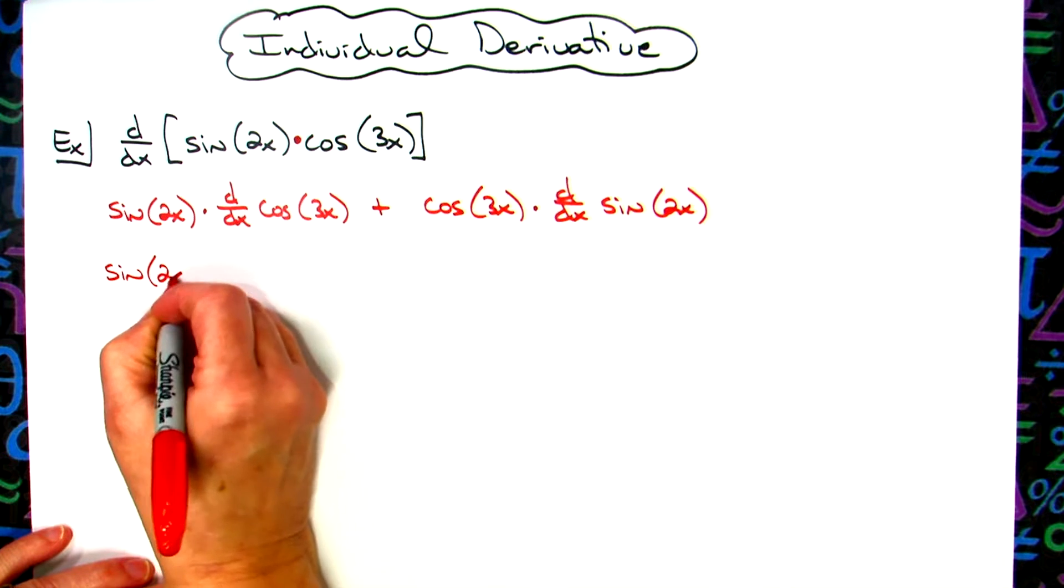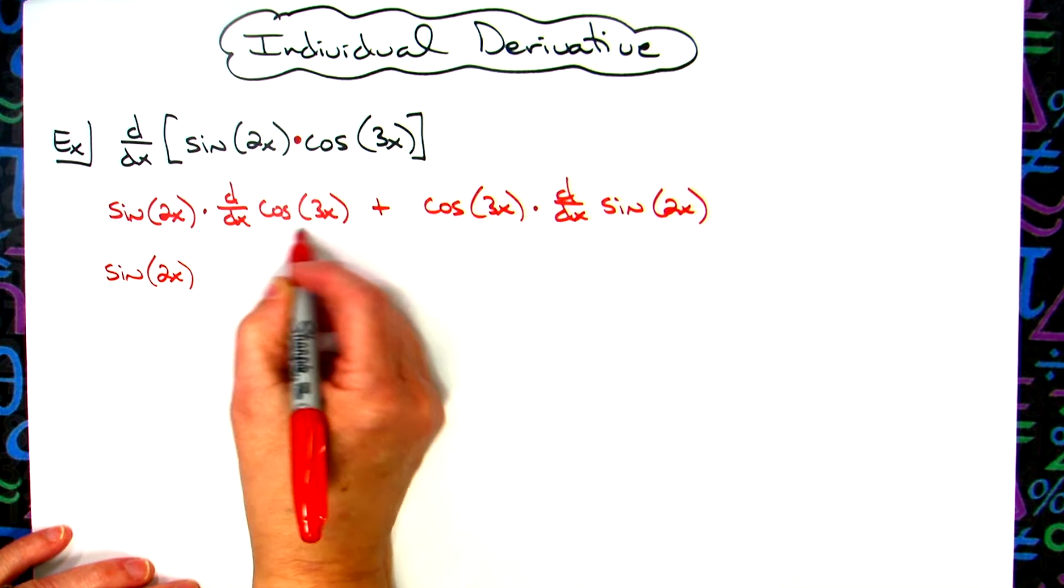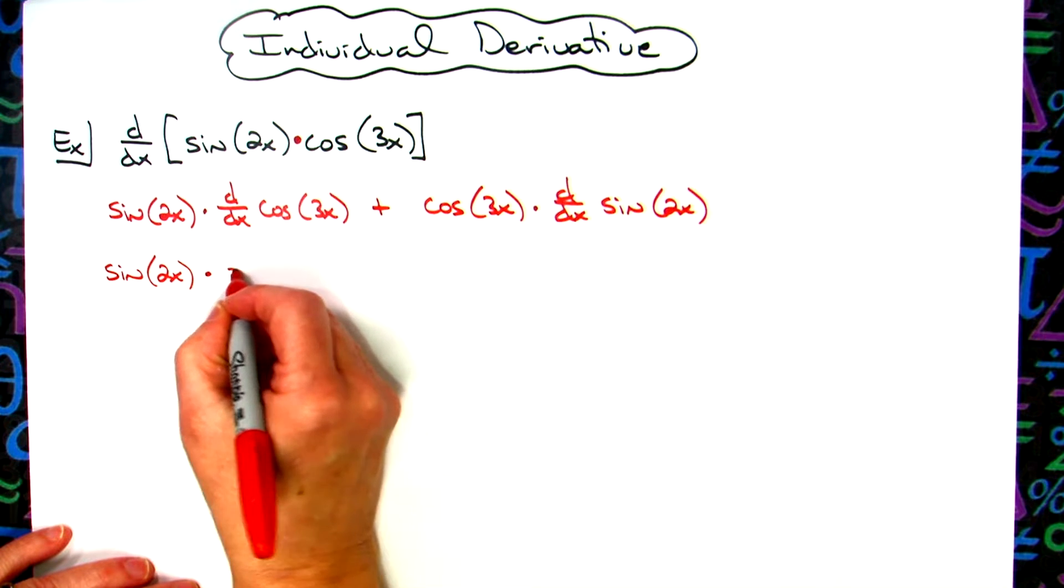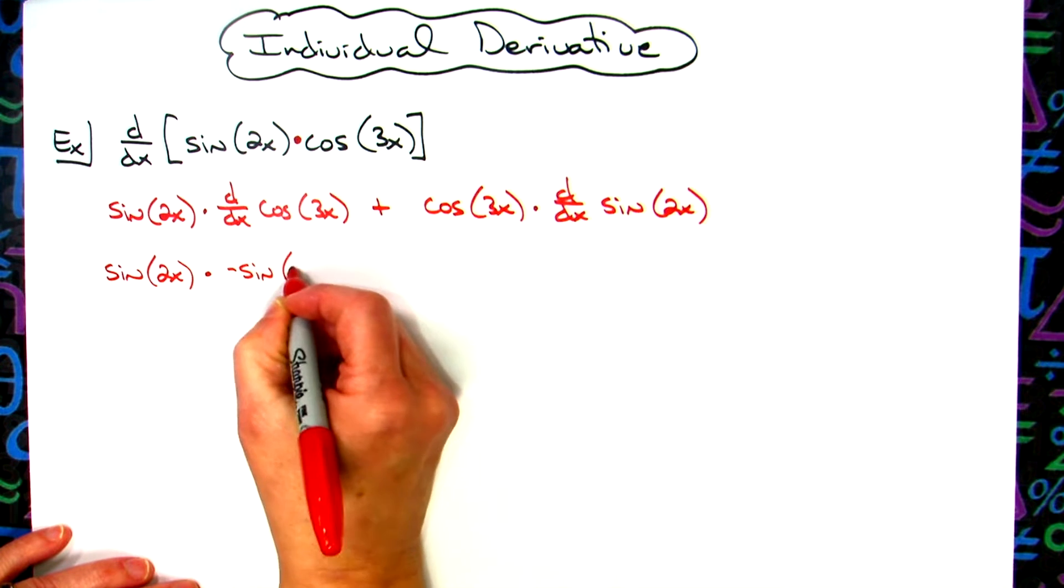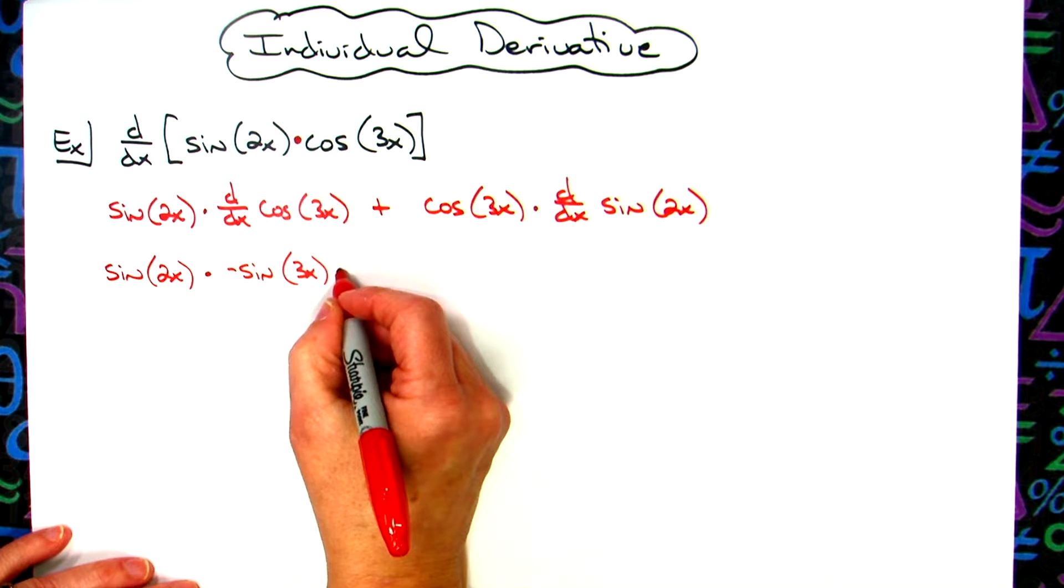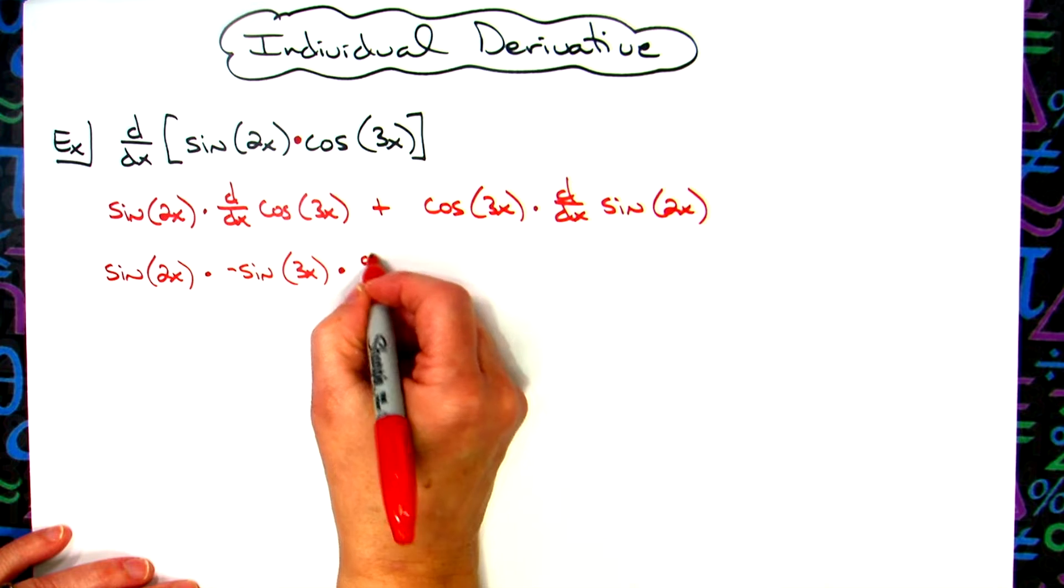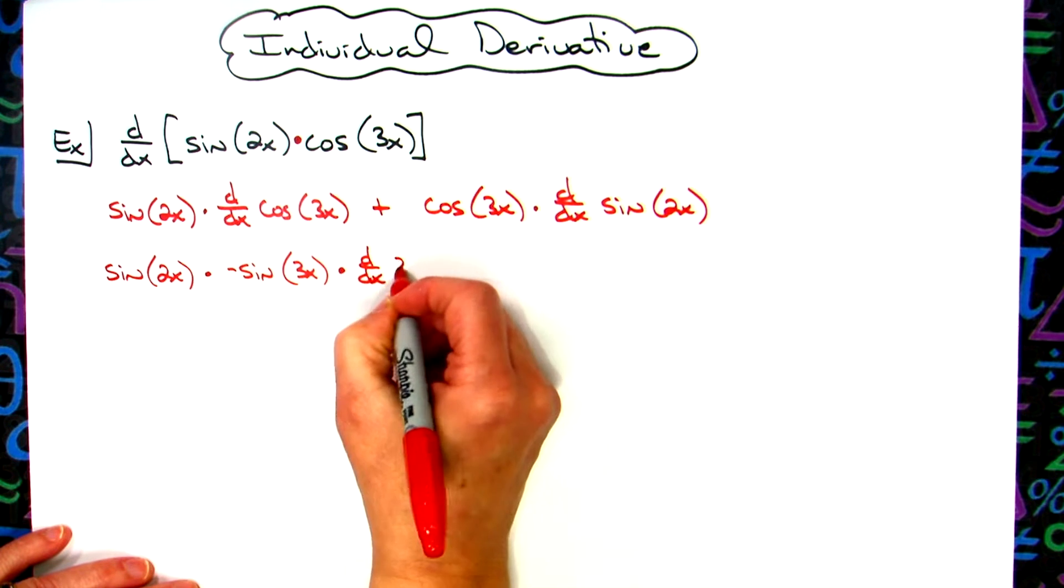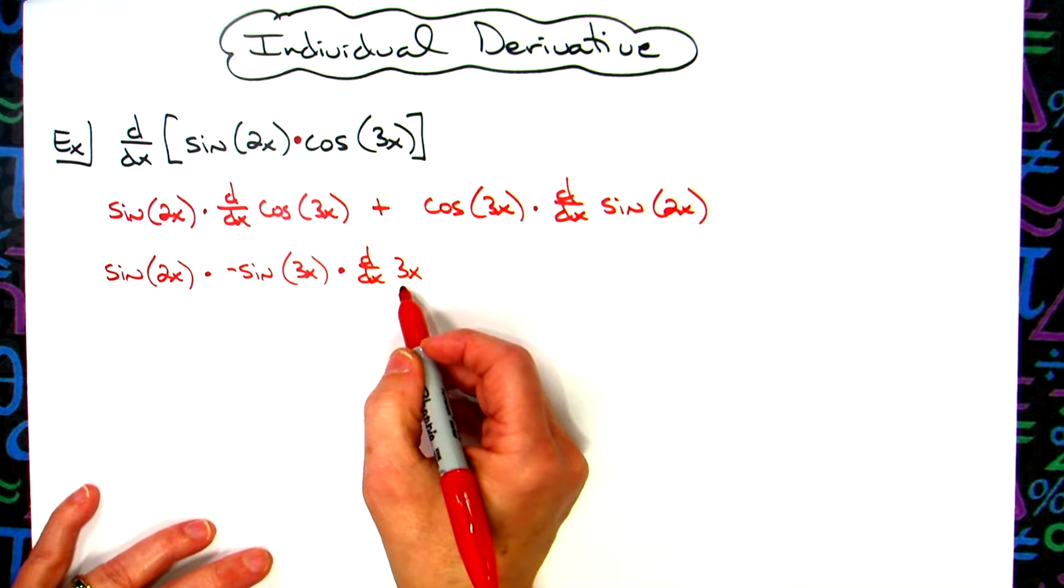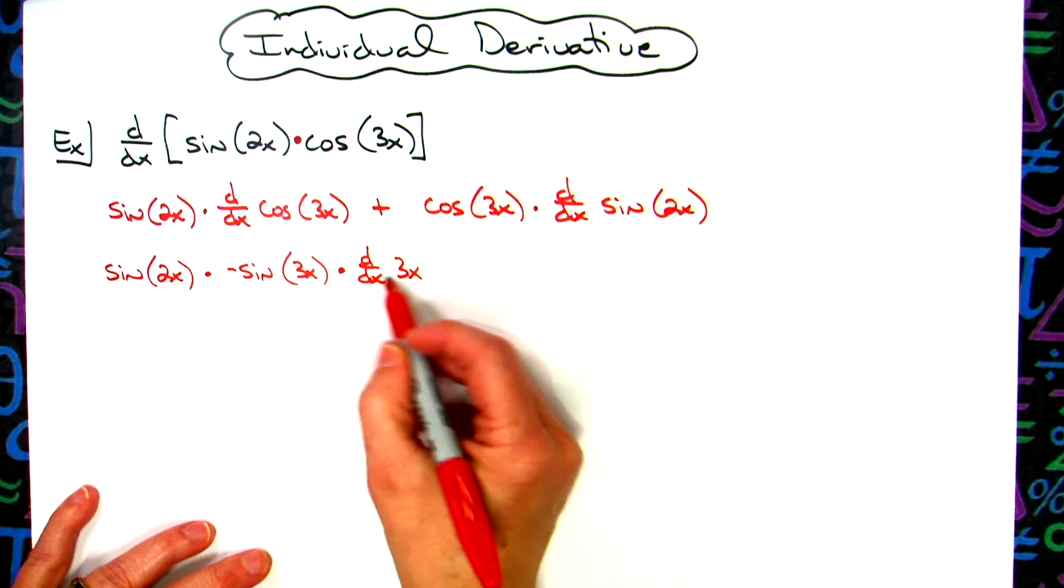All right, so that sine of 2x is just going to stay the way it is. Here I'm going to take the derivative of the outside function, so derivative of cosine is a minus sine. I'm going to leave the inside function alone and then here's the chain - take the derivative. We'll go ahead and do another d/dx of that inside function. Yes, you could have gone ahead and just straight taking the derivative there, but this definitely shows that chain right there.